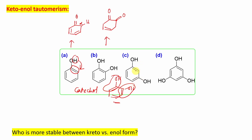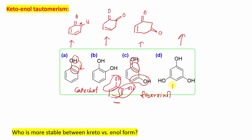The compound in option C is called resorcinol. For resorcinol, what will happen is it will produce a 1,3-diketo — actually a dicarbonyl compound — one carbonyl here and one carbonyl there. The third compound is called phloroglucinol, and it will produce a 1,3,5-triketo tricarbonyl compound.